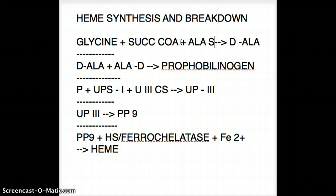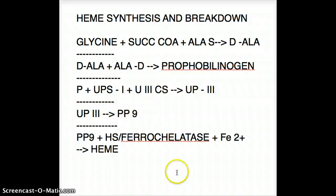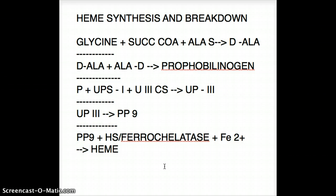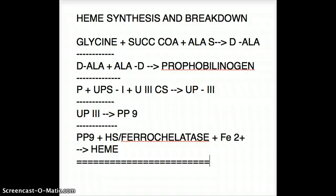Porphobilinogen then combines with uroporphyrinogen synthase I plus uroporphyrinogen III cosynthase to give us uroporphyrinogen III. Uroporphyrinogen III then gives us protoporphyrin IX — there could be more than one step there. Then protoporphyrin IX combines with heme synthase, also called ferrochelatase, and iron to give heme.